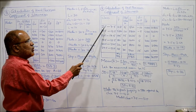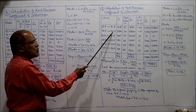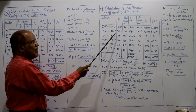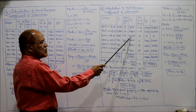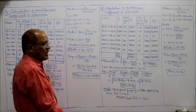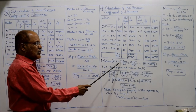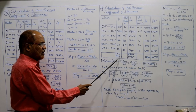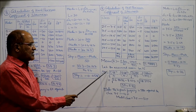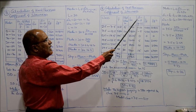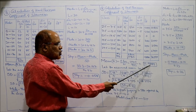Mid values: (2.5+7.5)/2 = 5, (7.5+12.5)/2 = 10, 15, 20, 25, 30. Multiplying f×m: Σfm = 11905. Mean = Σfm/n = 11905/993 = 11.9889. The actual mean is a fraction while mid values are whole numbers, so we choose the nearest mid value as assumed mean. Nearest to 11.9889 is 15, so A = 15.